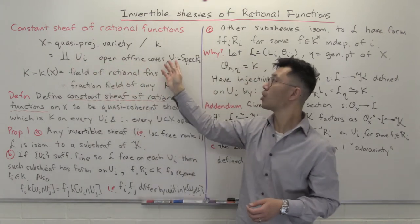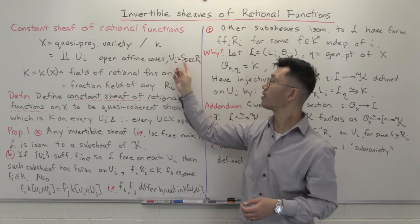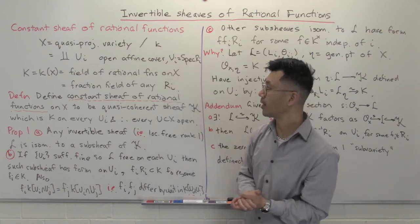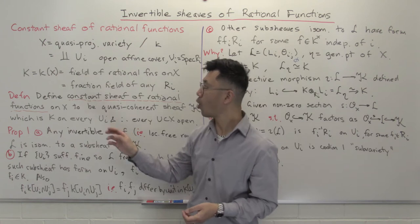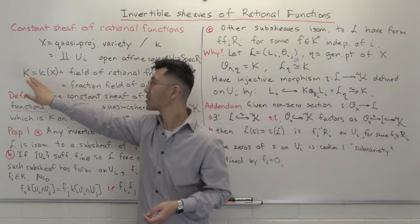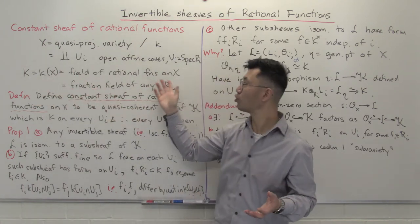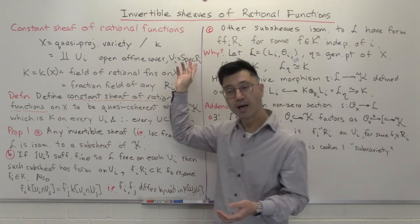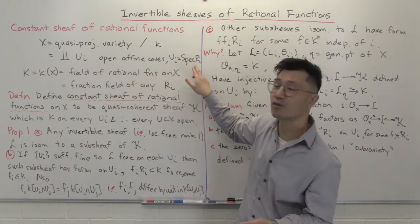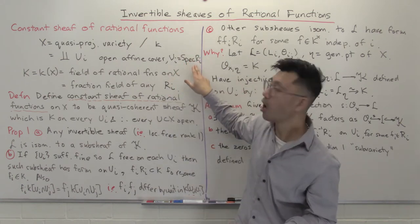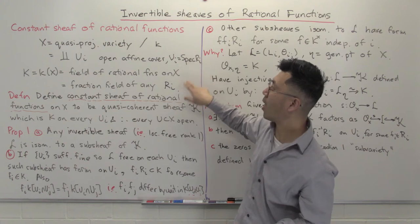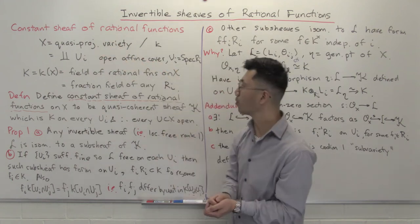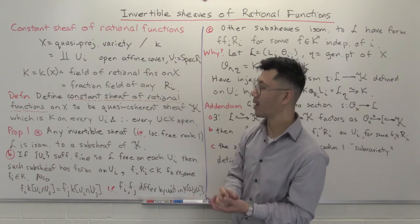These U_i's are affine, so they're really given by coordinates which I'm going to denote with R_i. We'll have k — that's k(X), the field of rational functions on X. Another way of looking at it is it's just the fraction field of this commutative domain R_i. We're going to assume this variety is irreducible, so that these are all domains.